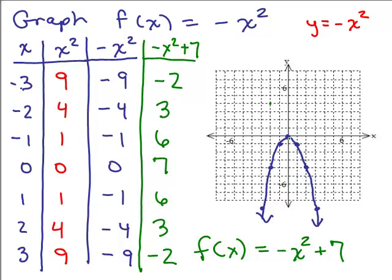An easy way to think about it is to take each ordered pair from y = -x² and shift it up 7 spaces. Think of the vertex as being at (0, 7) — the new origin — then go over 1 and down 1, over 2 and down 4, and so on. The resulting parabola still opens downward, and the vertex is at (0, 7), compared to (0, 0) for y = -x².